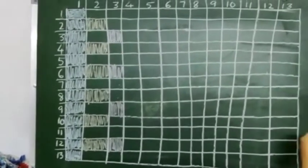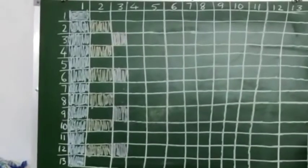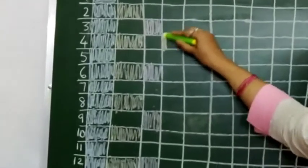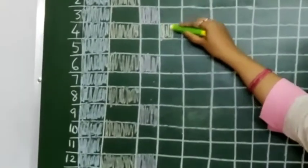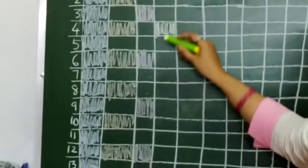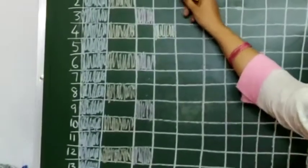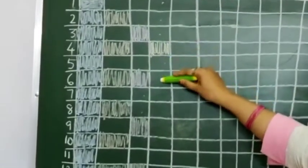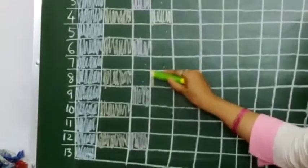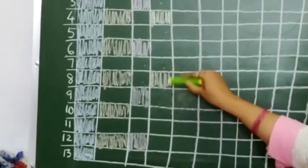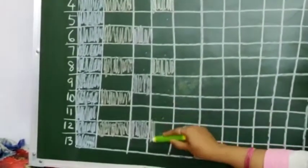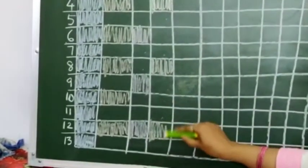Now again you need to change the color — I am just going to take yellow. And now you have to change the color and color every fourth block. Like this: first, second, third, fourth block colored. Then again count one, two, three, four — the fourth block colored. Then again the fourth block colored.